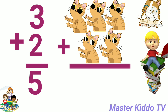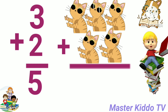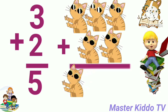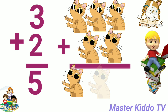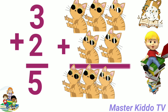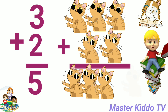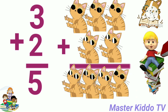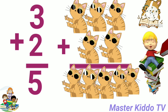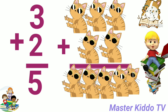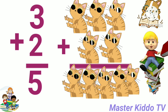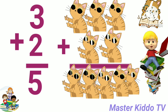3 cats plus 2 cats. The answer is 5 cats! Good. Answer is 5 cats. 3 plus 2 is equal 5.